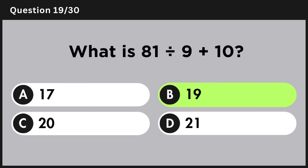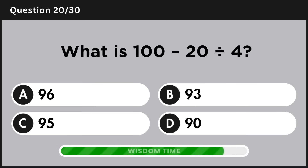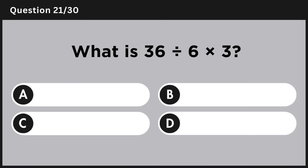Answer B: 19. What is 100 minus 20 divided by 4? Answer C: 95. What is 36 divided by 6 multiplied by 3?